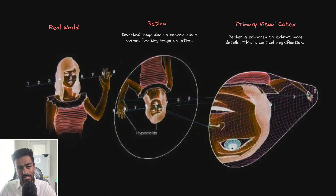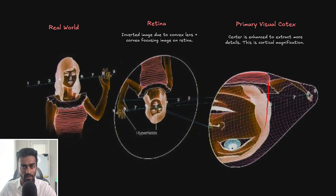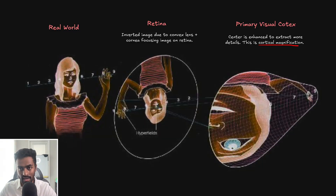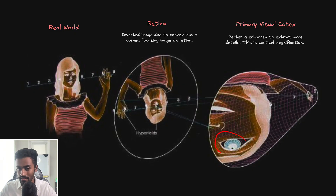The information arriving at the primary visual cortex is inverted, and the central part that we want to focus on is being blown up. This is due to something known as cortical magnification, which is done to extract certain details about the parts we actually want to focus on.